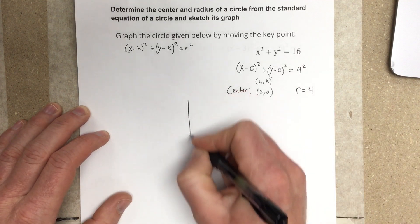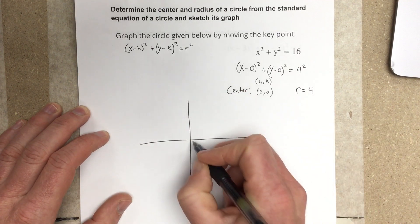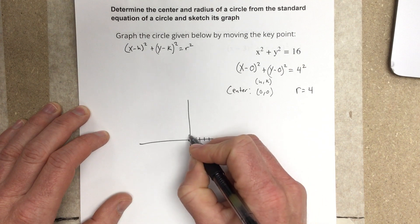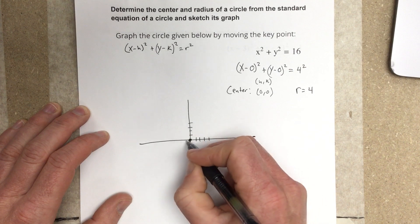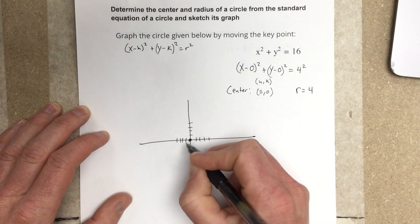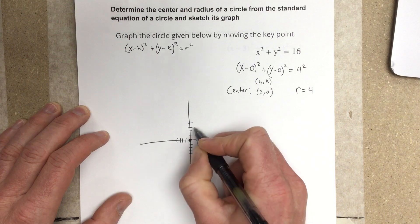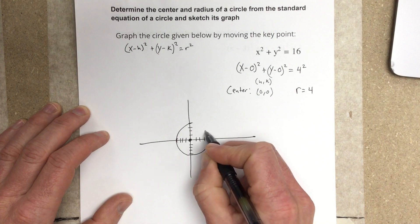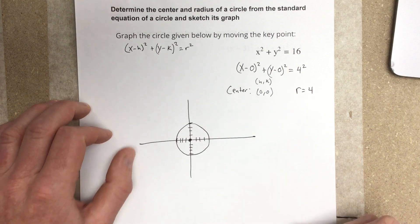If I were to sketch this, my center would be at (0, 0). I would go 1, 2, 3, 4 in every direction because of the radius, and then I would draw a circle with radius 4.